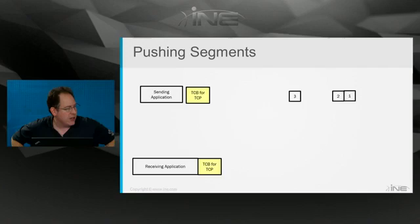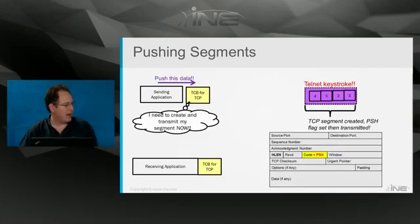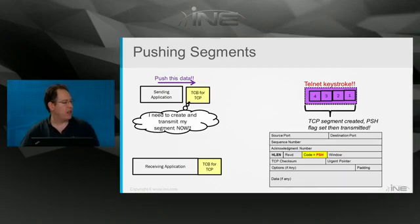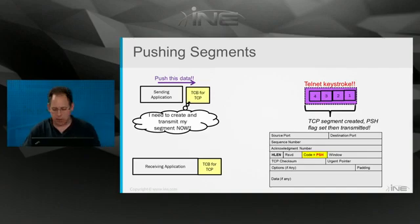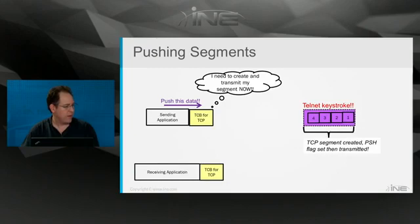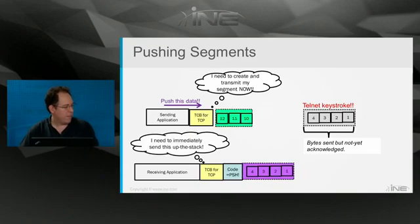So in the Telnet keystroke case, the sending application sends the push flag via its API. The transmission control block for TCP says: I need to create and send this segment right now. In the process of doing that, you can see in the code bits it sets the push flag, and then that segment goes immediately. On the receiver, when it sees the push code, it says: I need to immediately push this up the stack to the application layer process.